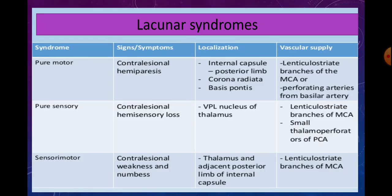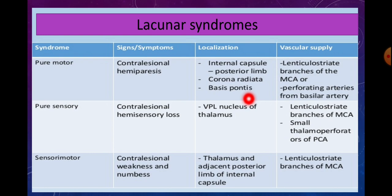Lacunar syndromes are six in number. The first is pure motor syndrome, whose symptom is contralateral hemiparesis. The localization is the posterior limb of the internal capsule, corona radiata, and basis pontis — the basal portion of the pons, which consists of white matter fibers of the corticospinal tract. The vascular supply is lenticulostriate branches of the middle cerebral artery or perforating branches of the basilar artery.